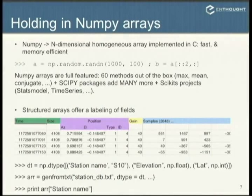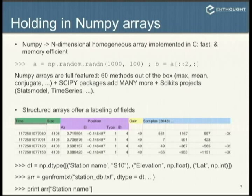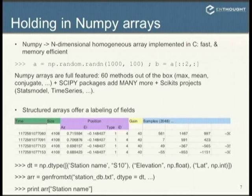NumPy arrays are amazing. They provide an n-dimensional array for storing data — you can expand, slice, and access it, and it's memory efficient. If you start accessing parts of the data, it won't make copies every time; it gives you new views on the big array. NumPy has a huge ecosystem built on top of it: all the SciPy packages, and even Scikit projects, among which statsmodels and timeseries would be relevant if you're dealing with statistics on time series.